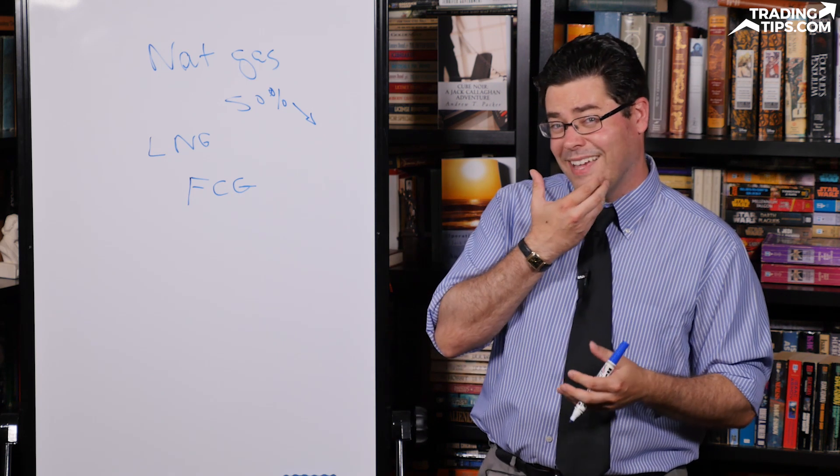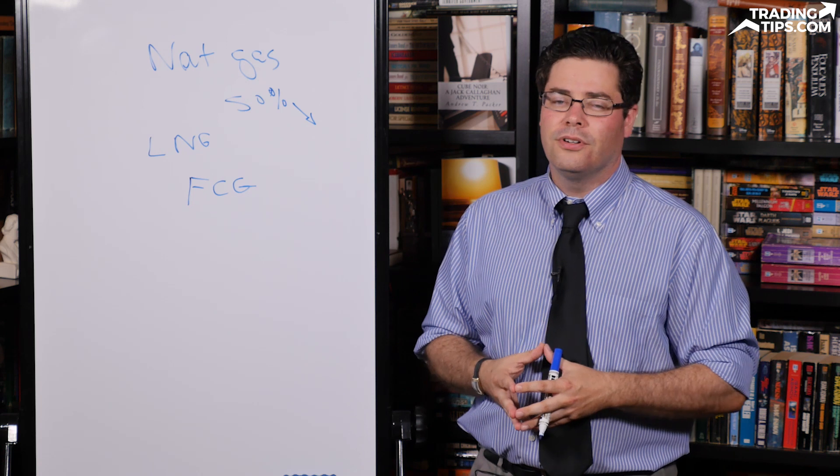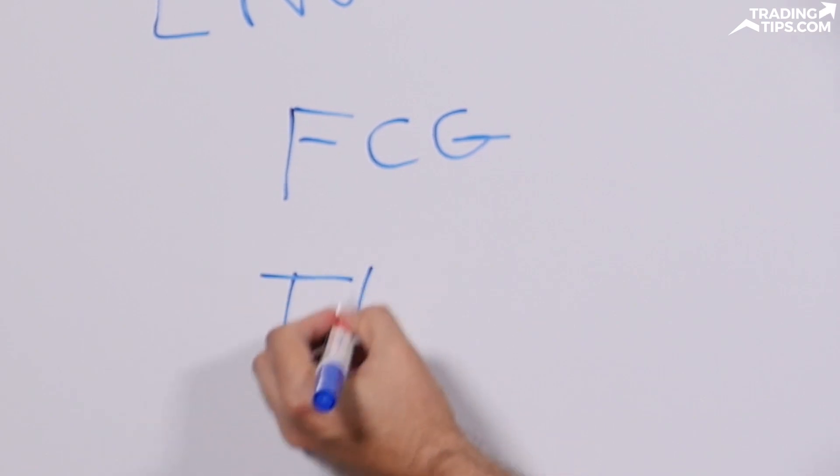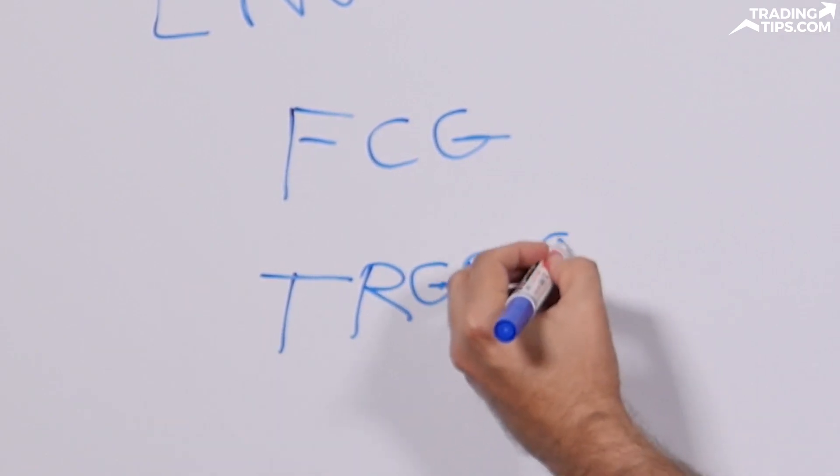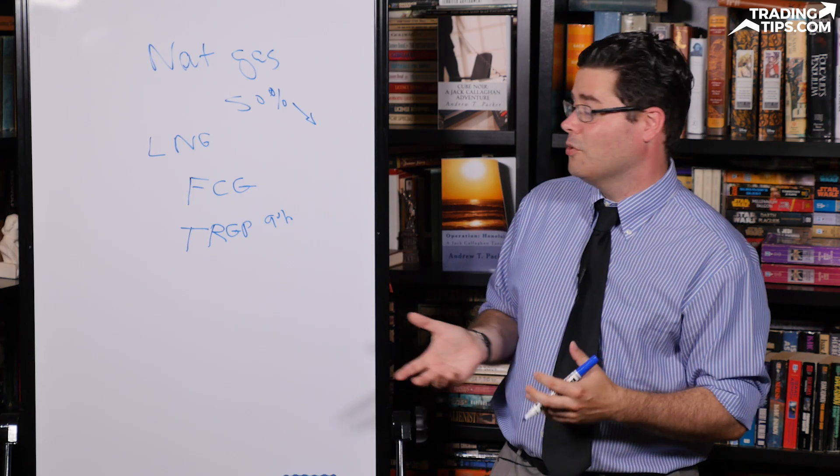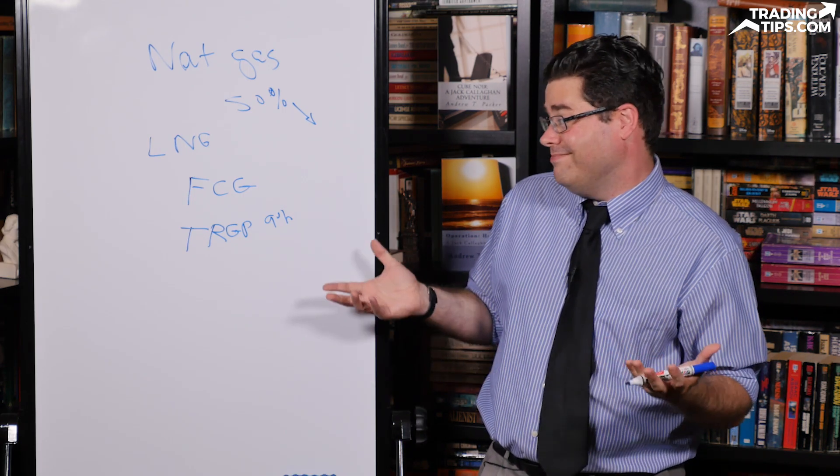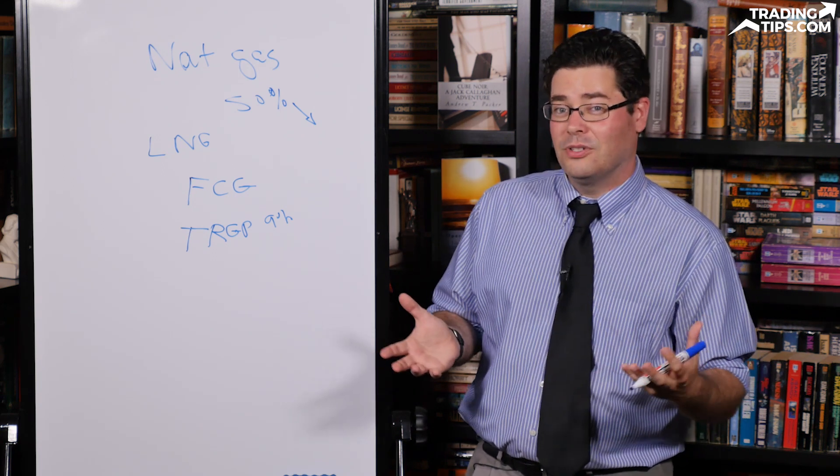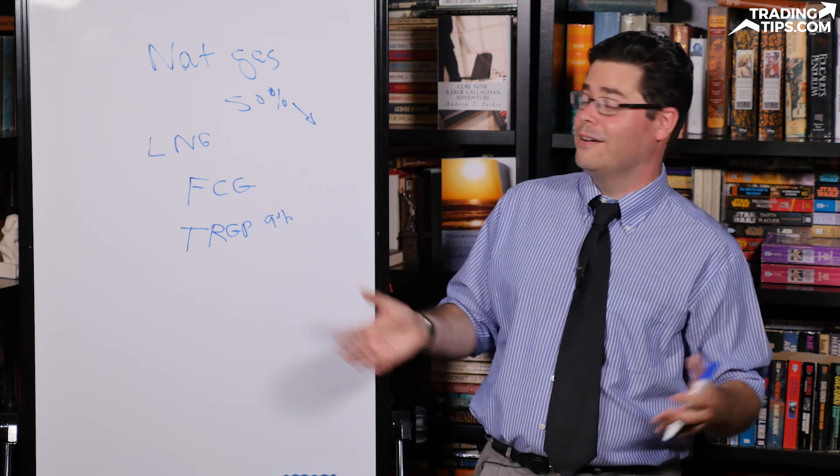A lot of those companies are structured as MLPs, which can create some tax problems for some folks or at least extra paperwork and extra headaches. But there is a company, Targa Resources, ticker TRGP, gives you about a 9 percent yield to play the natural gas, oil, and storage space right now, and it's a C Corp so you don't have that extra tax paperwork that goes into it. There are a lot of different ways to play this opportunity. There are even leveraged funds which, if you're more of a trader and the price starts going up, you can do a double ETF. So if the natural gas prices go up 10 percent, it'll go up 20 percent. You can even do a triple ETF which will turn your 10 percent move higher into a 30 percent move higher.